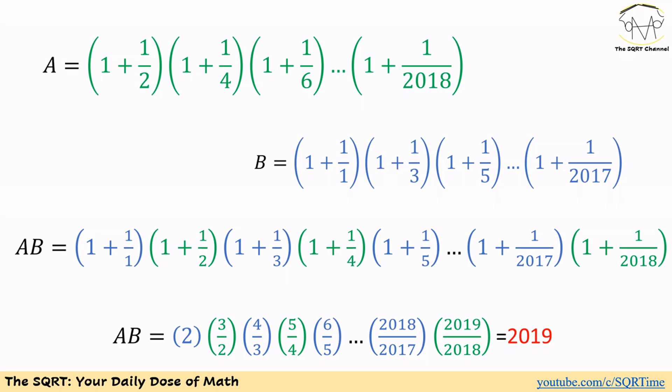Now let's simplify AB further. The first term equals 2, the second equals 3 over 2, the third equals 4 over 3, and so on. This is a telescoping product — common terms in the numerator and denominator cancel, and we find that AB equals 2019.